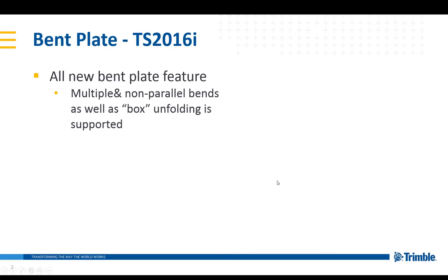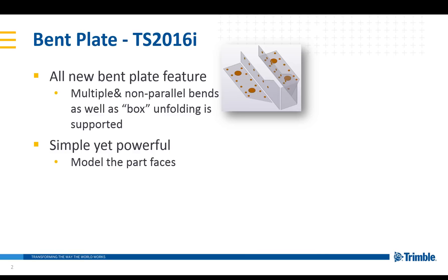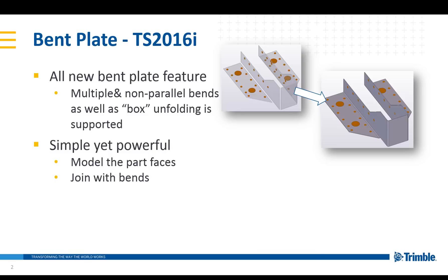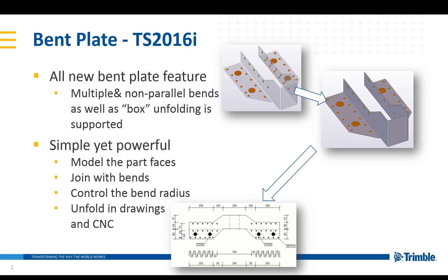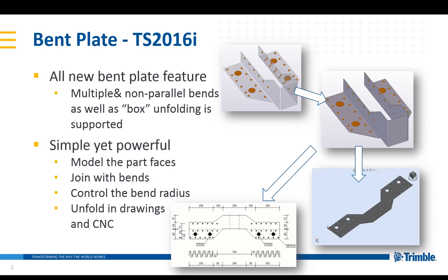This is an all new bent plate feature — it's not an extension. This is built out of the box and allows you to create multiple and non-parallel bends as well as box unfolding. The way it works is you model the part faces with a gap between them, join them with the bends using this bent plate functionality, and you have the ability to control the bend radius. These shapes will automatically unfold in drawings and in the CNC files.